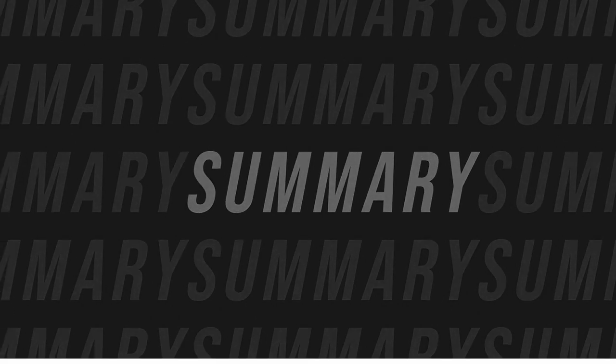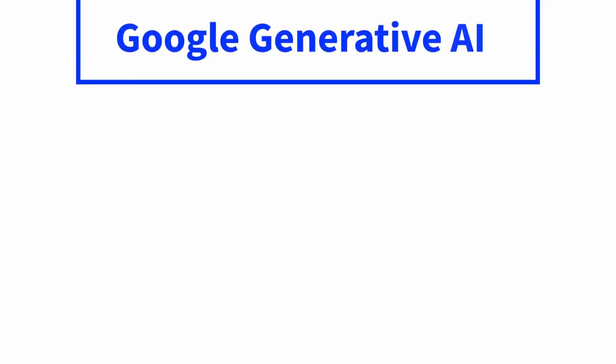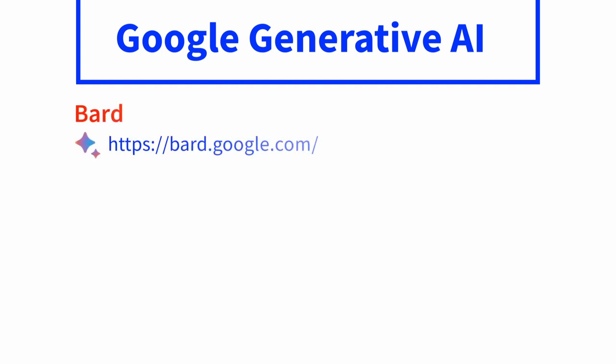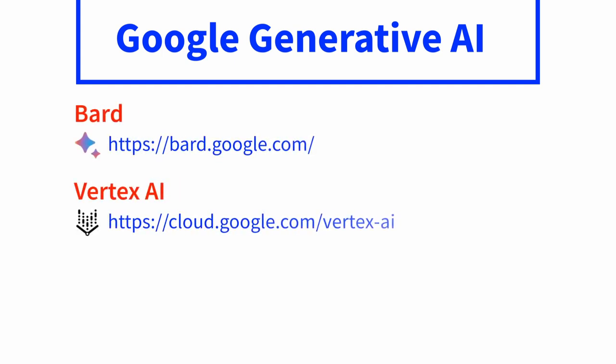So in summary, for Google Generative AI: if you wish to look at consumer products, see Bard; and if you wish to look at enterprise products, see Vertex AI.